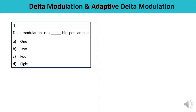Question 1: Delta Modulation uses how many bits per sample — 1, 2, 4, or 8? Delta Modulation is used for analog to digital conversion and it is a simple form of differential pulse code modulation. It uses 1 bit per sample, and it depends upon the difference between the current and previous sample values. So the answer is A — 1 bit per sample.